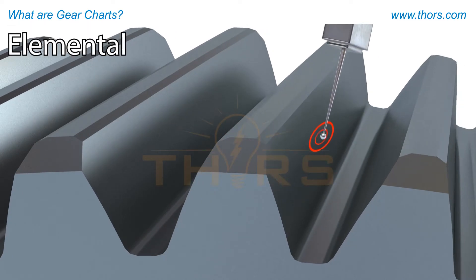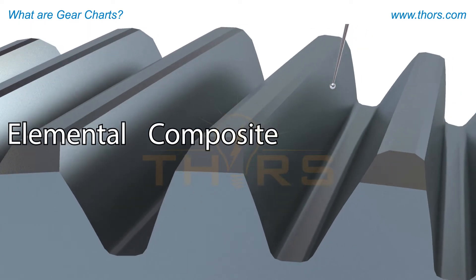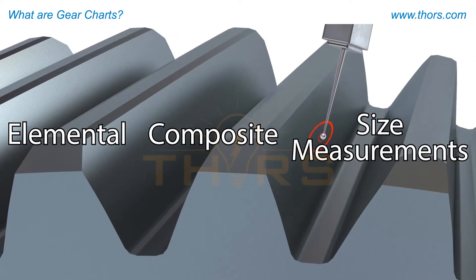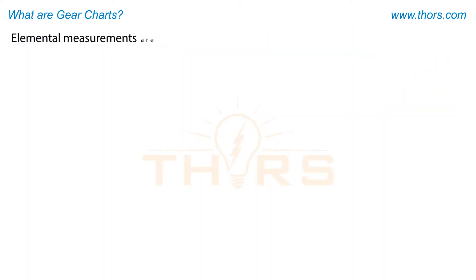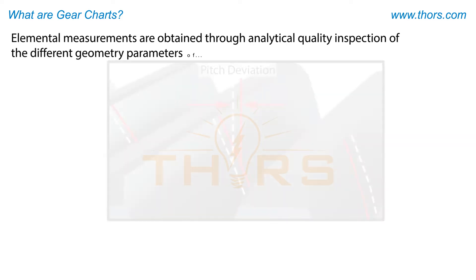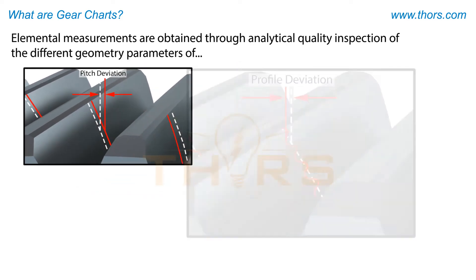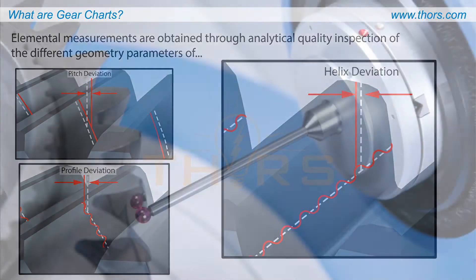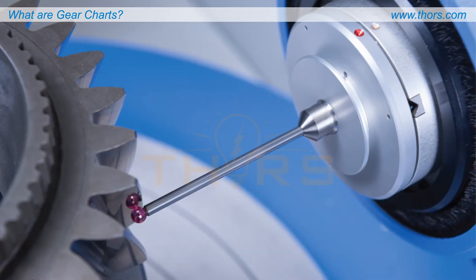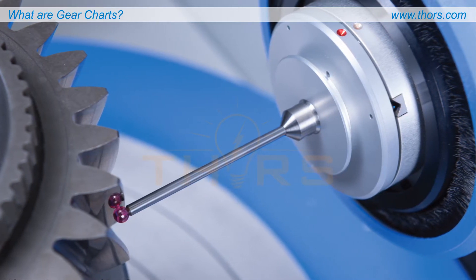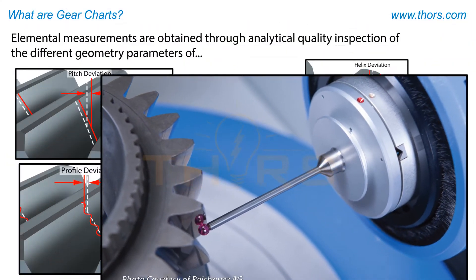The factors that define gear accuracy are classified into three main groups: elemental, composite, and size measurements. Elemental measurements are obtained through analytical quality inspection of the different geometry parameters of pitch deviation, profile deviation, and helix deviation, using manual, automated, or computer-controlled gear measuring equipment.